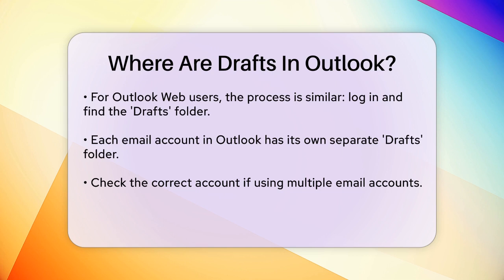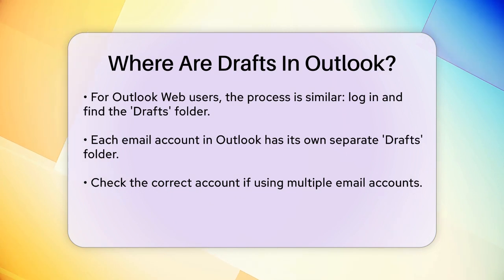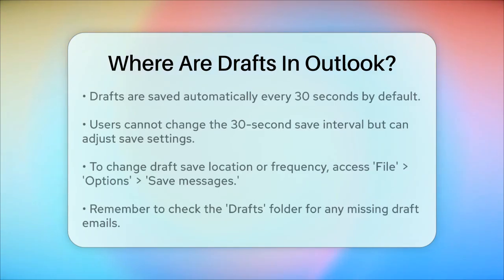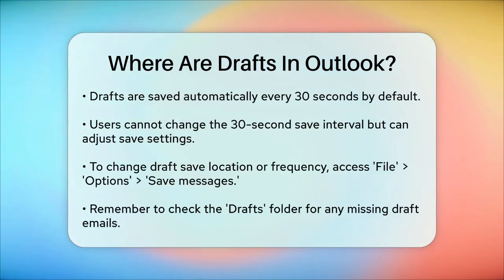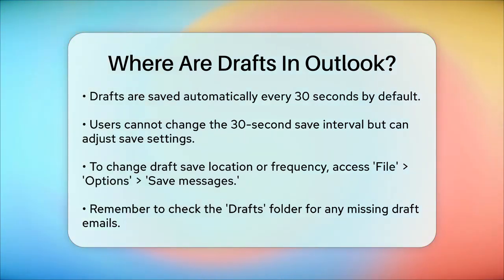Each email account in Outlook has its own Drafts folder, so make sure you're checking the correct account if you use multiple accounts. Drafts are saved every 30 seconds by default, and you can't change this time interval, but you can adjust where drafts are saved. For example, you can change the save location or the frequency of saving drafts by going to the File tab, clicking Options, and adjusting the settings under Save Messages.